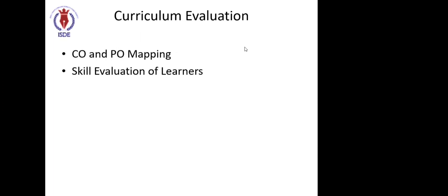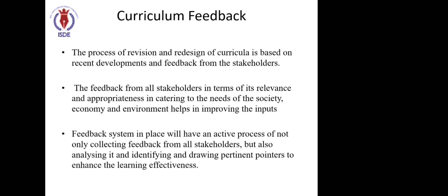For completing each subject unit or particular topic, make sure you have a skill evaluation — that is the right method to ensure whether the curriculum objective is being met through skill evaluation of learners. Before summative assessment, after finishing all units, make sure a skill evaluation has been done without pen and paper — in a more practical way — to ensure they have understood the course objectives. Curriculum evaluation is essential, and CO-PO mapping should be integrated into your academic administrative audit each year. IQAC members play a vital role here.